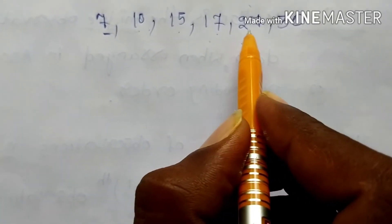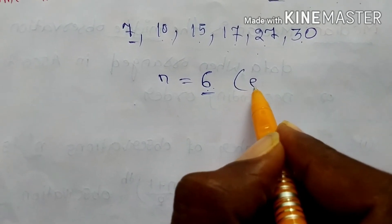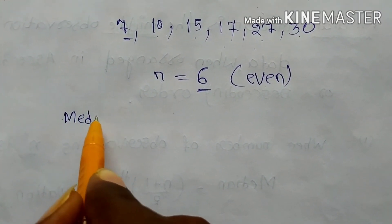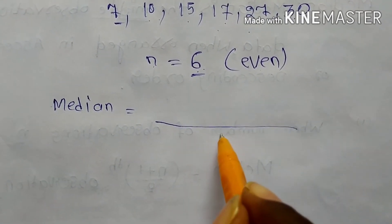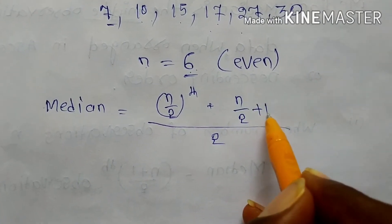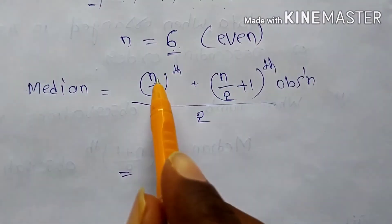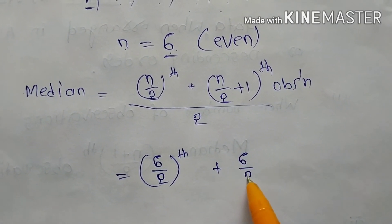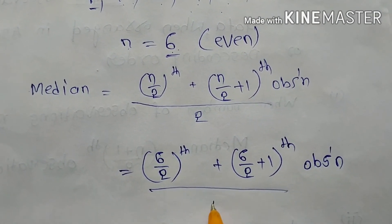Count the observations: there are six total, so n equals 6, which is even. For an even number, the formula is: median equals the average of the (n/2) and (n/2 + 1) observations. Substituting n=6: that is the average of the (6/2) and (6/2 + 1) observations, which is the average of the 3rd and 4th observations.